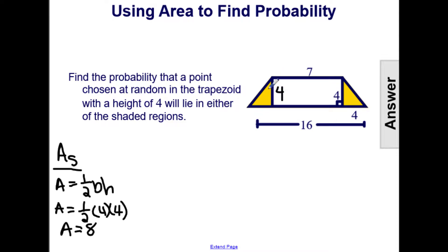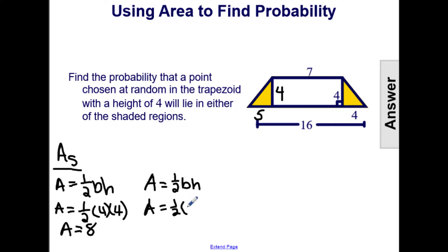Now let's find the area of the second triangle. The height is 4 since it's the same height along the whole trapezoid. We have a whole entire base of 16. We've already used 4 units and 7 units, so 4 plus 7 is 11, and 16 minus 11 means this is a base of 5. So the second triangle is 1/2 times 5 times 4, giving an area of 10. Combining both shaded regions: 8 plus 10 equals 18.